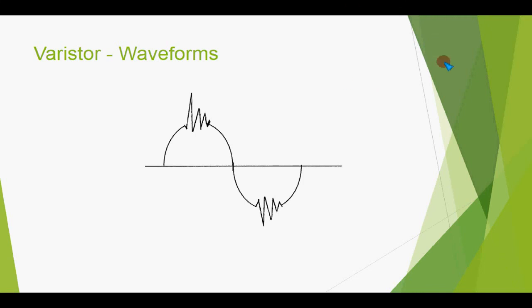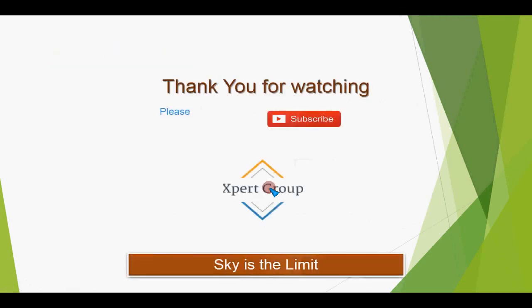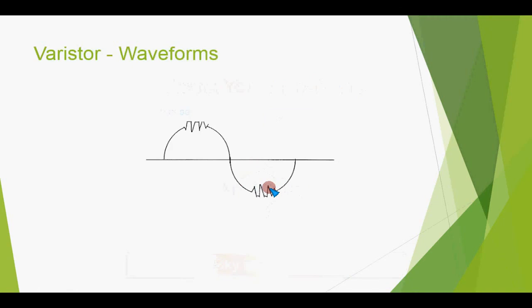Here you can see a waveform that has undesirable spikes which must not reach the input of a rectifier or any input signal. So by using a varistor, this is the varistor positive breakdown voltage and here the preset value of the negative breakdown voltage. And at the output these spikes would be clipped off by the varistor, and only our desired amount of voltage or waveform would reach the output of the varistor.